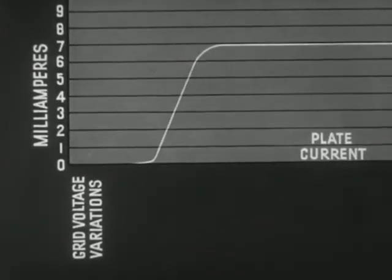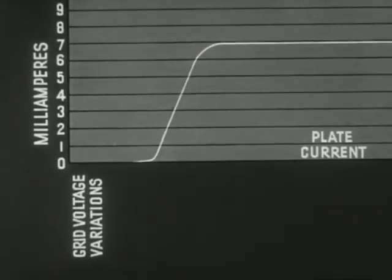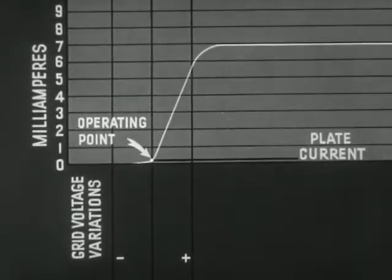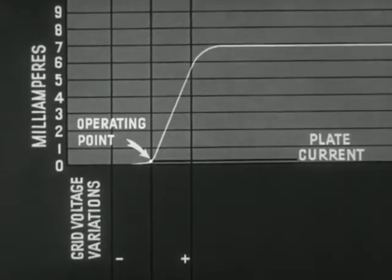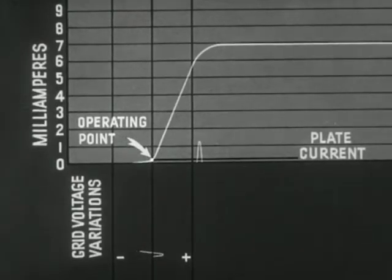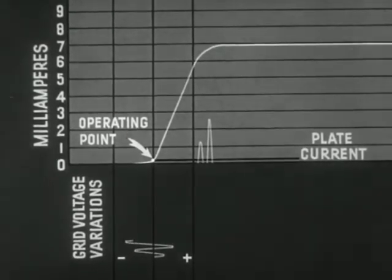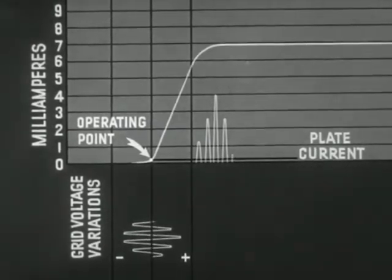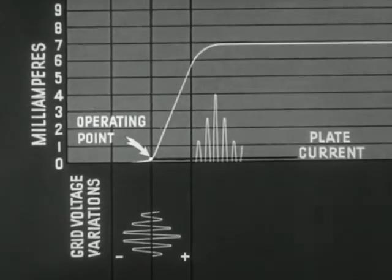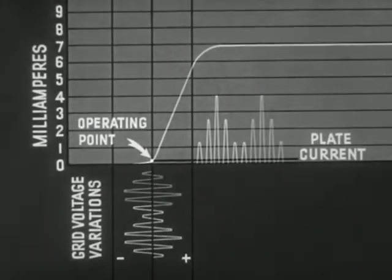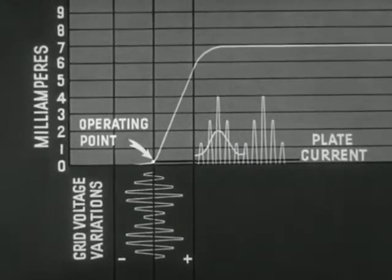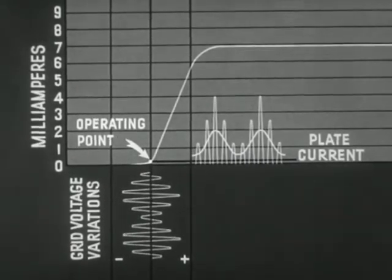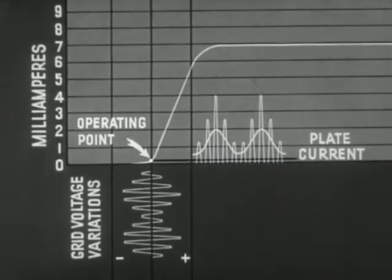The vacuum tube may also be operated as a detector. When used for this purpose, the grid bias is adjusted so that the operating point of the tube is just below the straight portion or knee of the characteristic curve. As a result, the positive half cycle of the radio frequency current in the grid circuit is amplified much more than the negative half of the cycle. The average plate current resulting from the unequal amplification of the positive and negative half cycles will be a direct current pulsating at audio frequency. Such a current will operate the earphones.